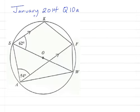We are asked to calculate, giving reasons for your answer, the measure of angle FAW. We are asked to determine the measure of angle FAW — that's this angle here. It's not too difficult to find if you can appreciate that the entire angle at A is 90 degrees, because it's an angle in a semicircle.